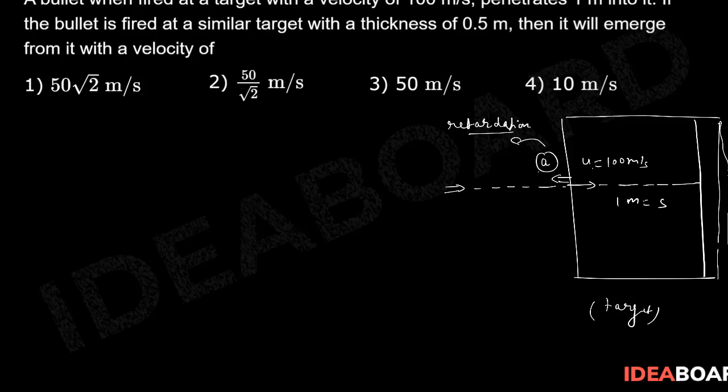We can calculate using V² = U² + 2AS. If we apply it, it stops here means V has to be 0. So 0 = 100² + 2 × A × S. Because this is a retardation, we need to apply a minus sign.